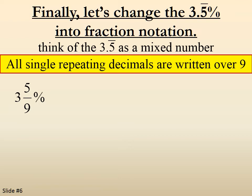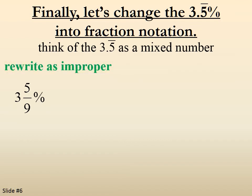So if it was a 4 repeating, it would be 4 over 9. If it was a 2 repeating, it would be 2 over 9, and so on. So we write it as 3 and 5 ninths, and we're going to make it improper, and that's going to give us 32 over 9.